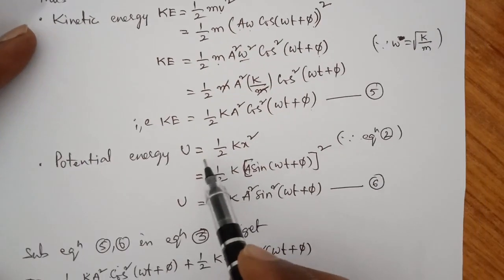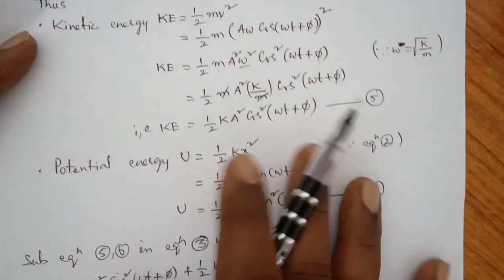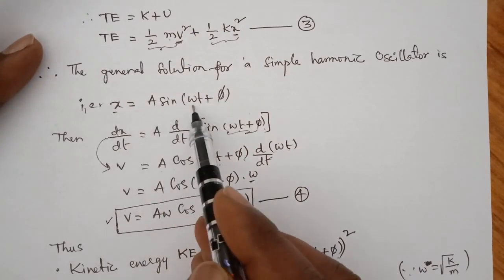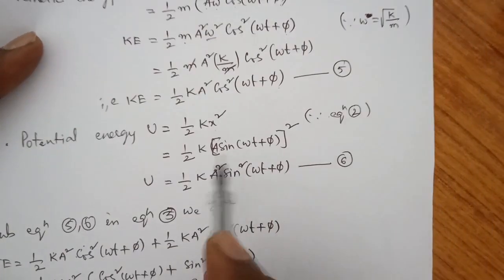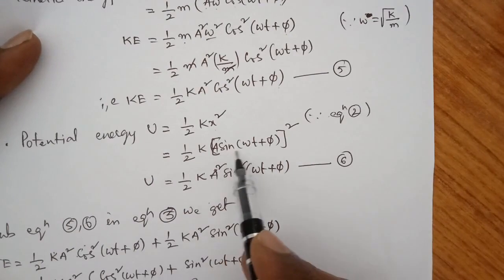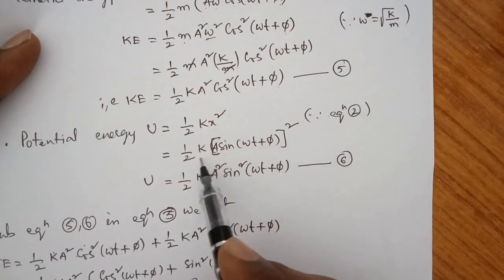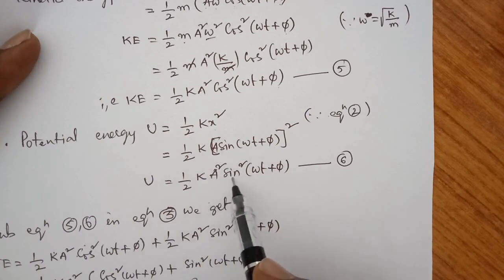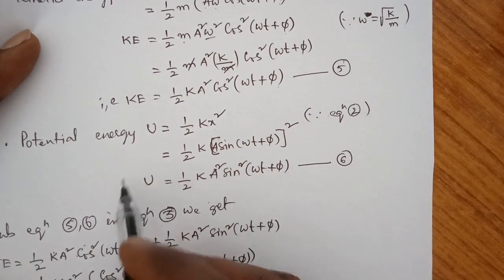Potential energy U equals half kx squared. Substituting x equals A sin of omega t plus phi, we get U equals half k into A squared sin squared of omega t plus phi. This is equation 6.